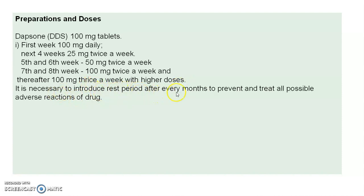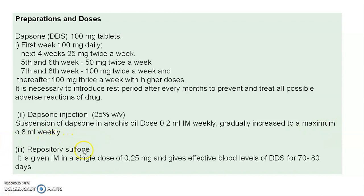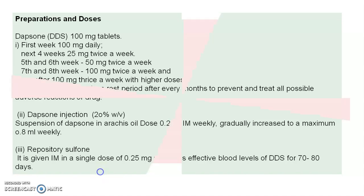A rest period is necessary after every month to prevent and treat possible adverse reactions of the drug. Since sulfones have adverse effects, some rest period is required. Dapsone injection is available as a 20% w/v suspension in oil; dose is 0.2 ml intramuscularly weekly, gradually increased to a maximum of 0.8 ml weekly. Repository sulfones are given intramuscularly in a single dose of 0.25 mg and provide effective blood levels of DDS for 70 to 80 days.